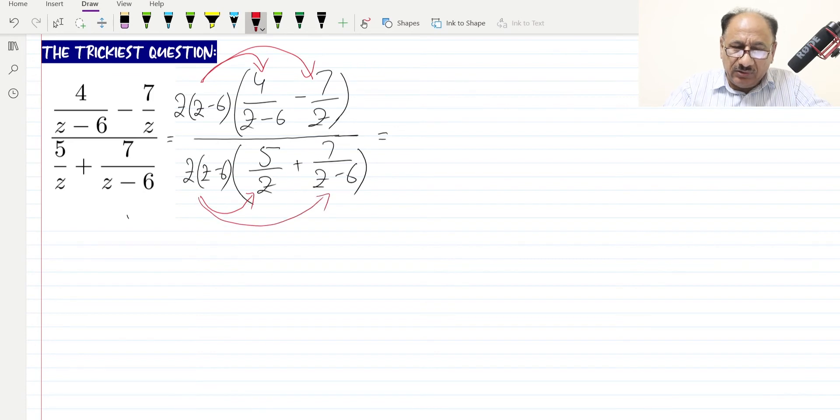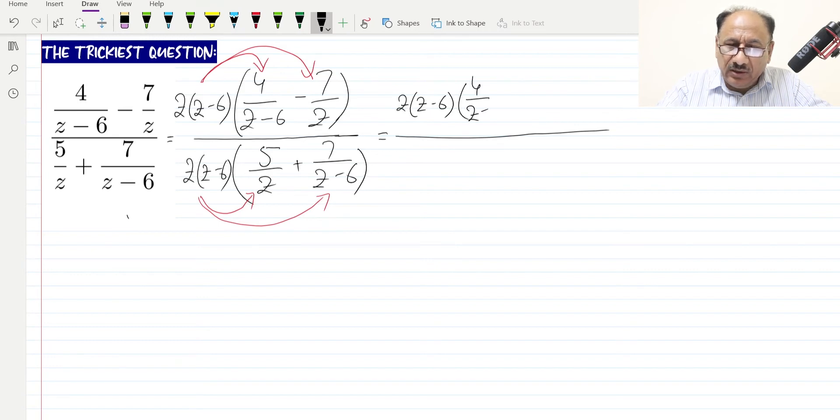Now what will be the result? We have the main fraction: z times z minus 6 multiplied by 4 over z minus 6, minus z times z minus 6 multiplied by 7 over z.